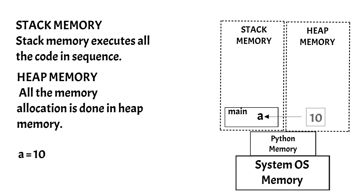Always remember that the Python execution starts from the main method in the stack memory. Which means that whenever you execute a Python source code, the stack memory will create a main method and then it will start the execution of the source code from the main method in the stack memory. I hope that this is clear.